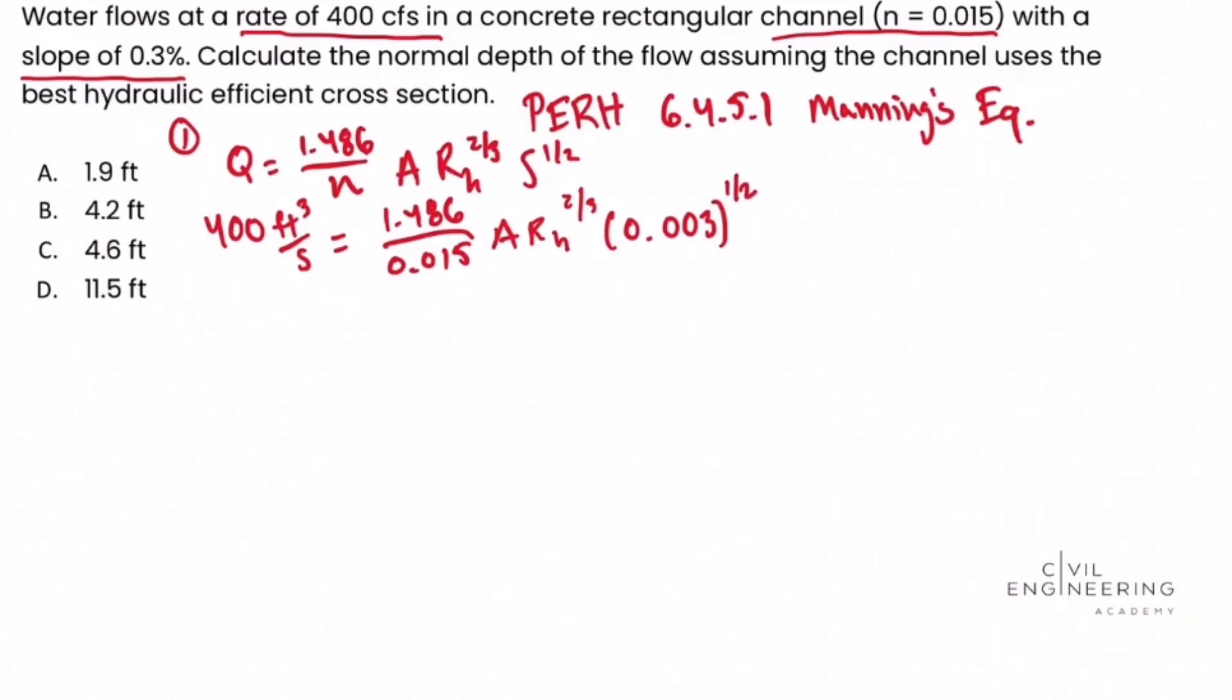Now, in order to get the area and the hydraulic radius, it's very simple, but we need to pick up on one key statement in this problem. It says that the channel uses the best hydraulic efficient cross section. So in step two, if we look at the PE reference handbook at section 6.4.5.4, that section overall is called flow in channels. What we see is there's a series of tables in this section, and there's the best hydraulic efficient section table.